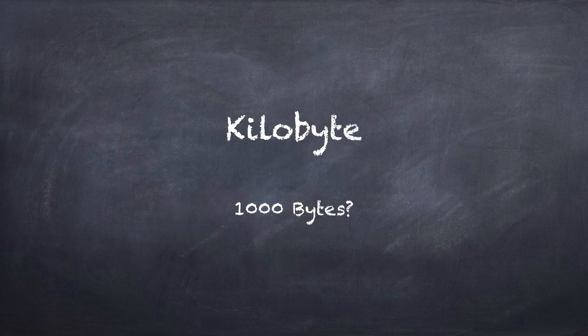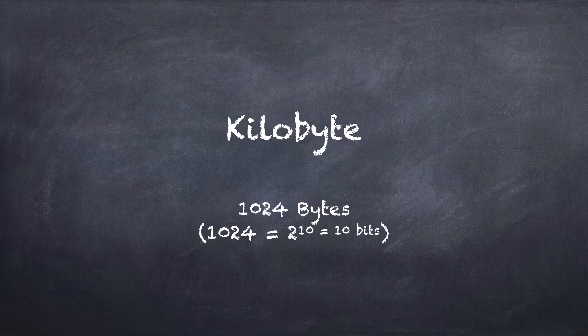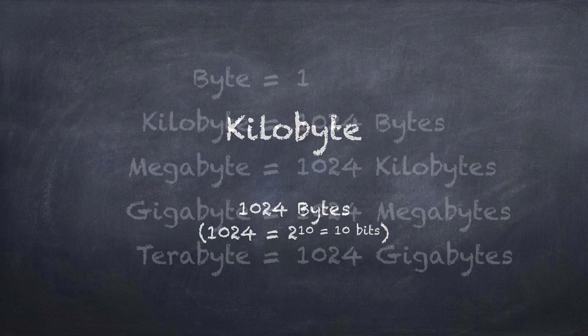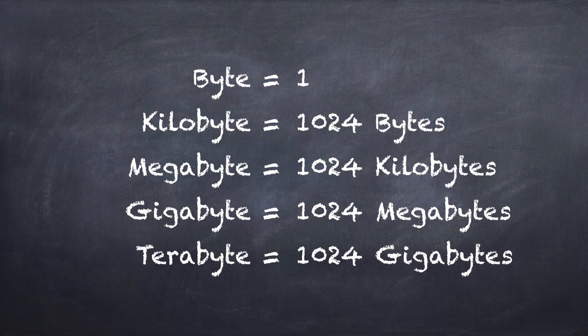Kilo is a prefix used to describe a thousand, so you'd think a kilobyte is a thousand bytes — but that's not actually the case. It's 1024 bytes. There's a decimal definition of kilo, mega, and giga, and there's a binary definition. The binary definition is not a thousand but two to the tenth power, which is 1024. It's convenient that 1024 and 1000 are really close, which led to using the same terms for both. A kilobyte is 1024 bytes, a megabyte is 1024 kilobytes, and each one is a multiple of 1024 more than the previous.